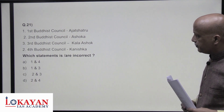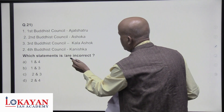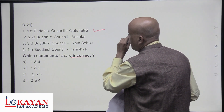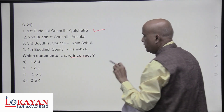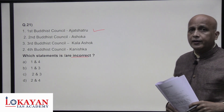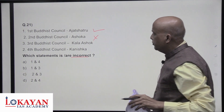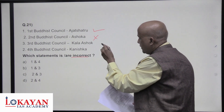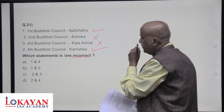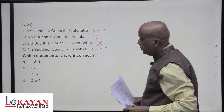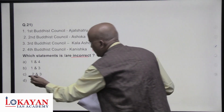Which of the following statements about Buddhist Councils are incorrect? The first Buddhist Council was sponsored by Ajatashatru — correct. The second Buddhist Council was not by the Mauryas but by the Shishunaga dynasty — specifically Kalashoka sponsored the second one. The third was by Ashoka (Mauryas) and the fourth by Kanishka in Kashmir — correct. So statements two and three are incorrect — answer is A.